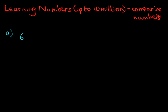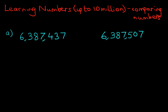We've got two numbers here. We're being asked which number is larger and which number is smaller. Do you recall the different symbols we can use? In yellow: less than, equals to, and greater than. The number on the left is 6,387,437 and the number on the right is 6,387,507.